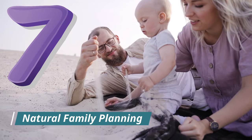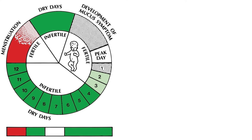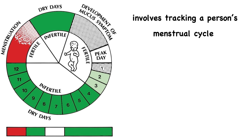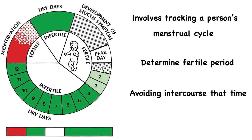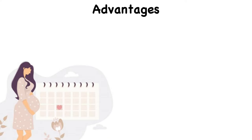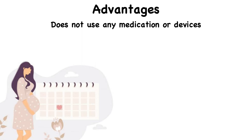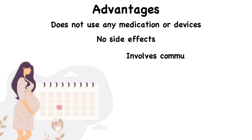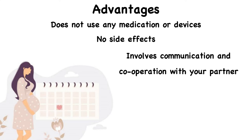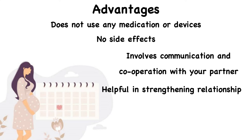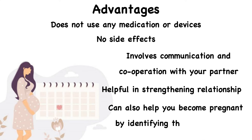The seventh method is natural family planning. This method involves tracking a person's menstrual cycle to determine their fertile period and avoiding intercourse during that time. The advantages are that this method does not use any medication or device, so associated side effects are not seen. It also involves communication and cooperation with your partner, which may help strengthen your relationship.